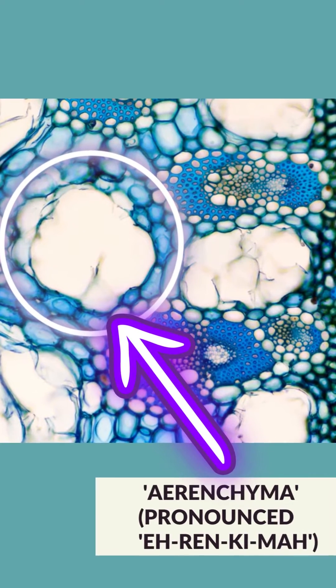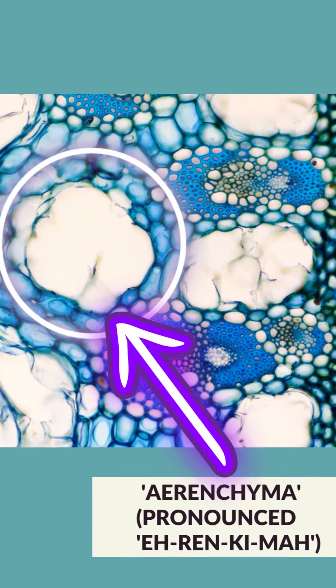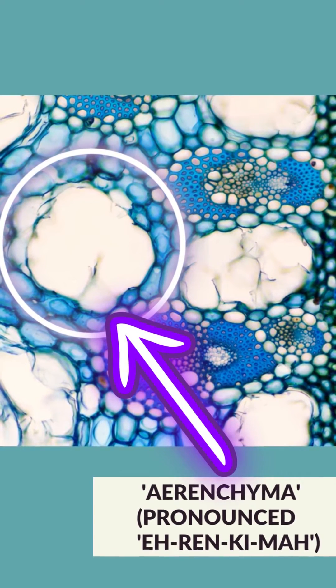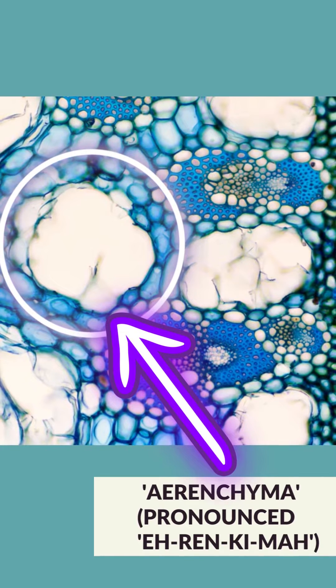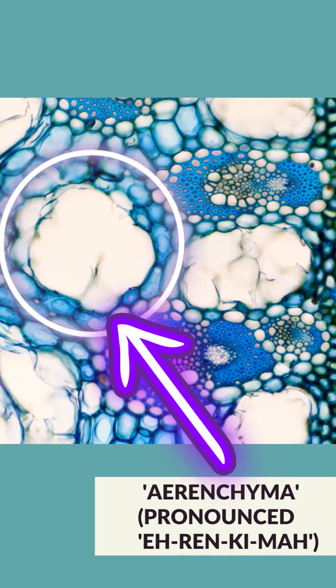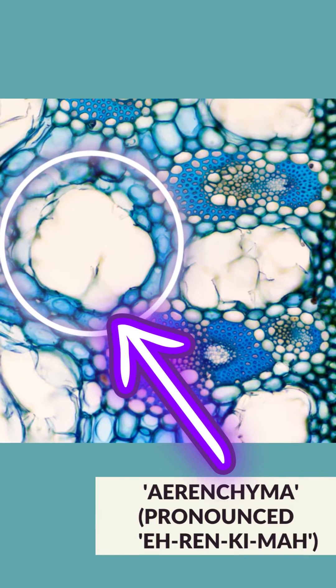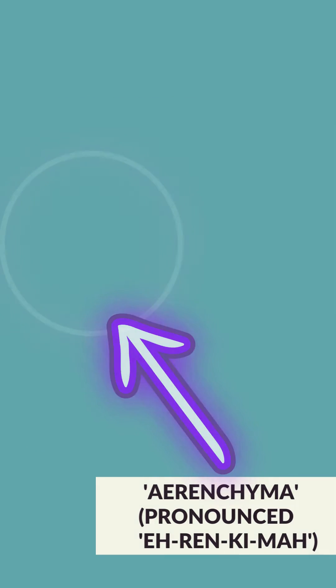It's a cross-section of a Tasmanian juncus stem that you're looking at, and you can see the large white areas here, which are called aerenchyma — big air pockets that supply oxygen down the stem to the roots.